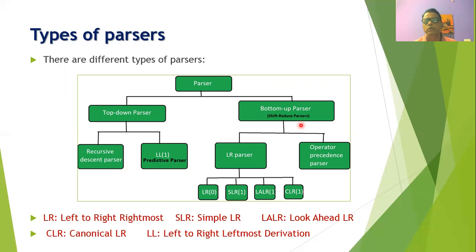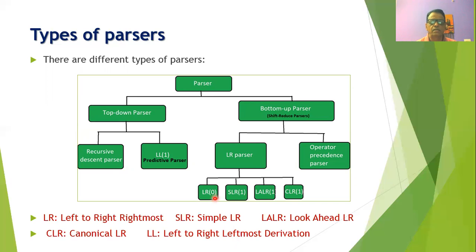Bottom-up parsers are also called shift reduce parsers. There are different types of shift reduce parsers such as LR parser and operator precedence parser. In LR parser, L stands for left to right and R stands for rightmost derivation. There are different types of LR parsers: LR0, SLR, LALR1, and CLR1. SLR stands for simple LR parser, LALR stands for look-ahead LR parser, and CLR stands for canonical LR parser.